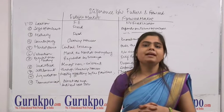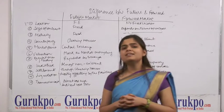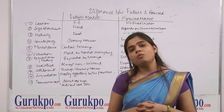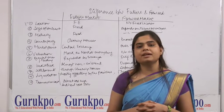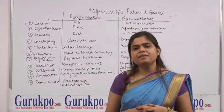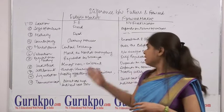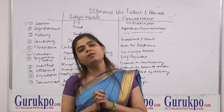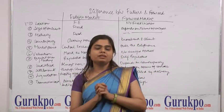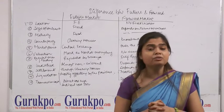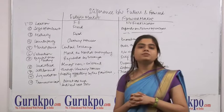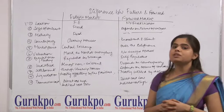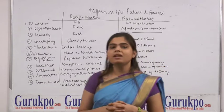Futures and forwards follow a similar contract procedure, but there are differences. In futures, there is a standardized contract, and in forwards, it is not a standardized contract. The main objective of futures is to minimize price fluctuation in the contract. There are two main terminologies: long future, which means we buy the future, and short future, which means we sell the futures.